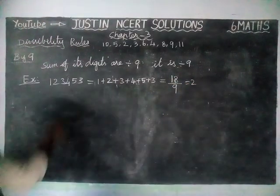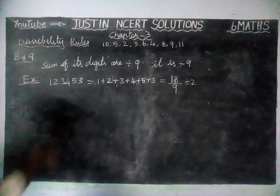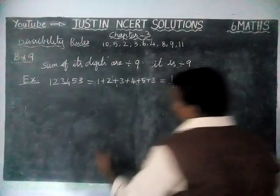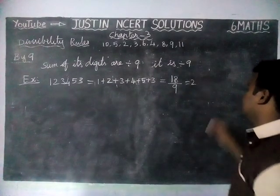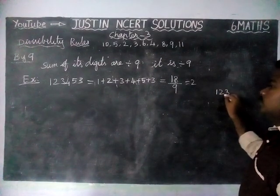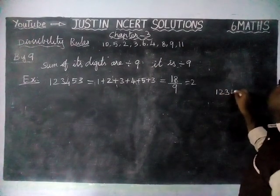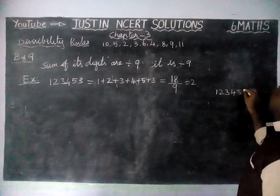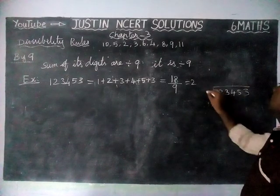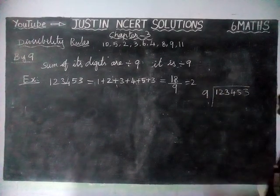So the whole number is divisible by 9. According to the rule, the whole number is divisible by 9. Now we are going to check it. We will check it by 9.